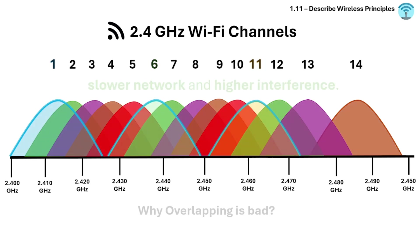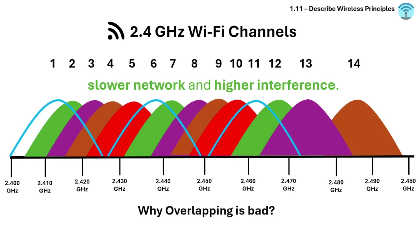Why is overlapping bad? Overlapping channels are like devices talking over each other — it means slower network speeds and higher interference.